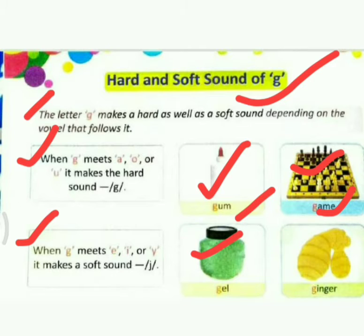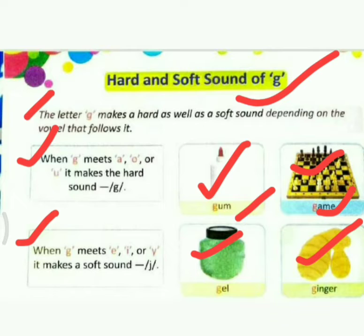One more example: G-I-N-G-E-R. Which vowel follows G? I. So how do we read it? Ginger — G-I-N-G-E-R. Ginger. Good.